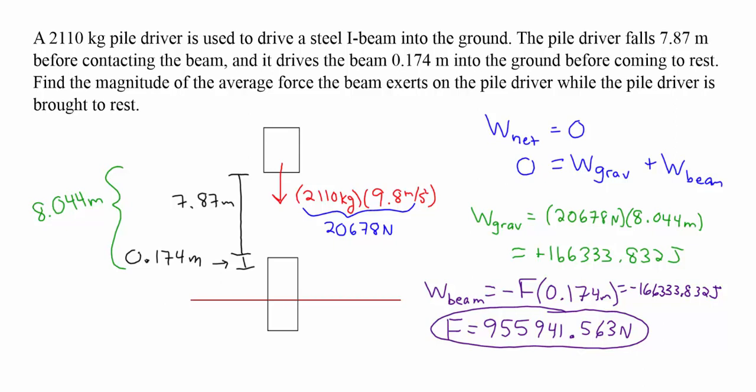This is a problem similar to lifting and lowering type problems where the net work done is zero. The difference is the force of gravity is acting over the entire 8.044 meters, but the force of the beam is only acting over the final 17.4 centimeters or 0.174 meters. This allows us to find that unknown force of the beam.